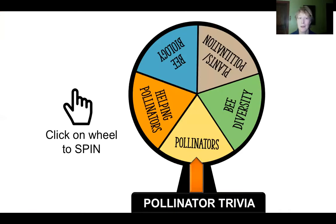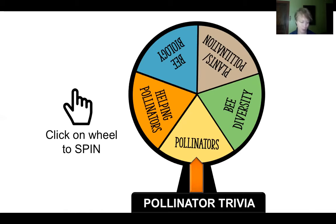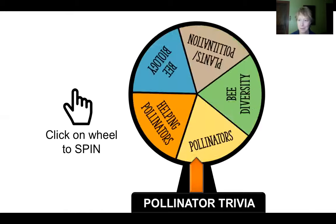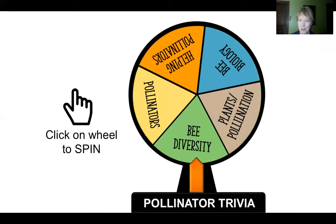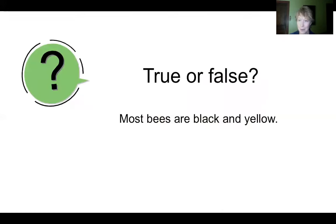In between each question, we have a wheel that comes up. This is to give some interaction even though you may be presenting this remotely — or you can be presenting it in a room with people too. We have a digital wheel that when you press space or click on the screen, it will spin and bring you to one of the categories. We have five different categories of questions.